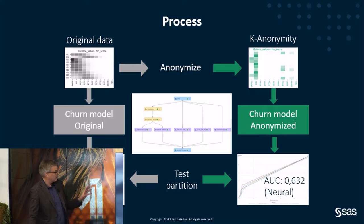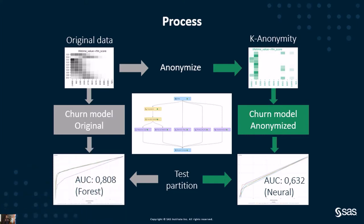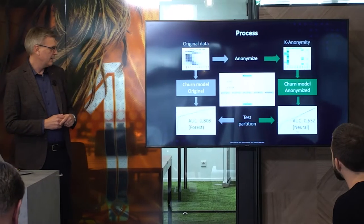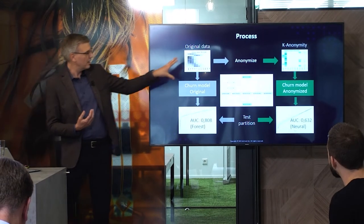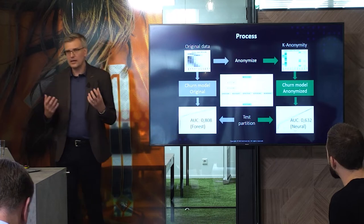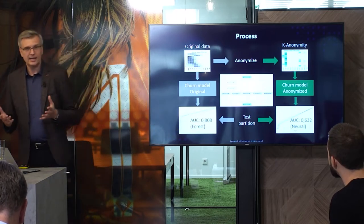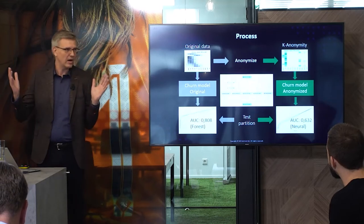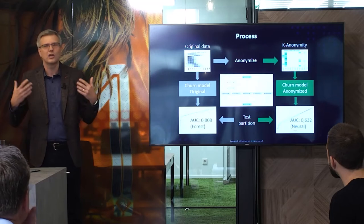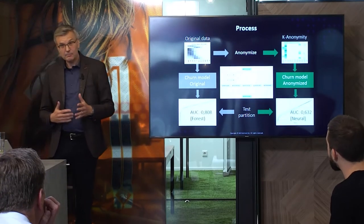The results were very promising for synthetic data but not for anonymization. For the non-machine learning experts in the audience: we look at the area under the ROC curve, which tells you about true positives and true negatives — essentially the accuracy of the model. When comparing the original data with the anonymized data, the area under the curve is 0.8 on original data and only 0.6 on anonymized data. A random model would already score 0.5, so the anonymized model loses a lot of predictive power and isn't really usable.